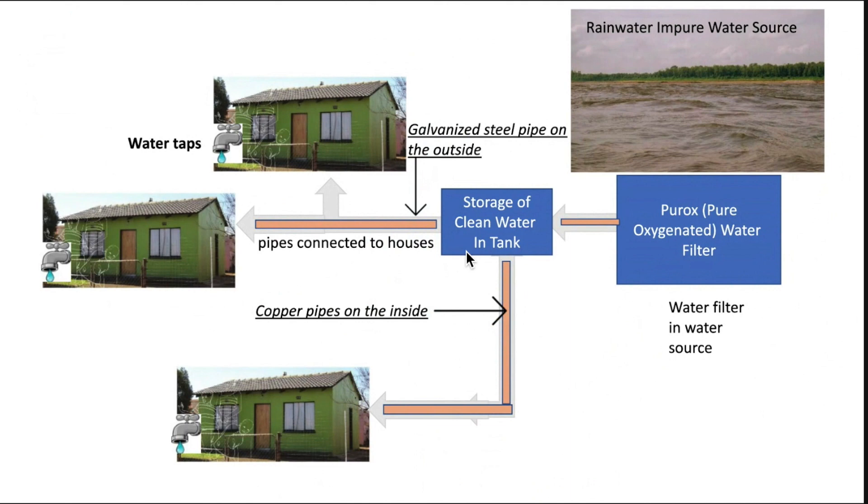These pipes will be made of copper and galvanized steel pipes will cover the copper. Copper kills bacteria in water and galvanized steel pipes are strong and sturdy.